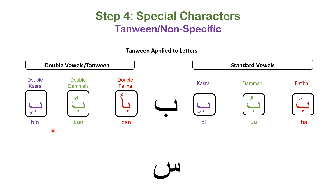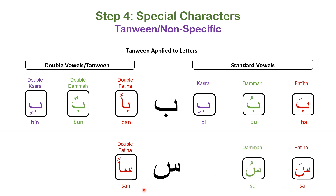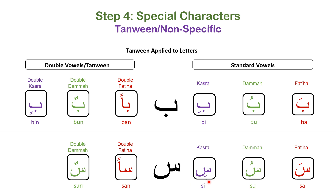Just back to the point: tanwin or the doubling of vowels just adds an 'n' sound to the pronunciation of the vowel itself. Ba, ban; bu, bun; bi, bin. Same with the letter sin — sin fatha: 'sa'; sin double fatha: 'san'; sin dhamma: 'su'; sin double dhamma: 'sun'; sin kasra: 'si'; sin double kasra or tanwin kasra: 'sin'. So: sa, san; su, sun; si, sin. That is the main function of tanwin.